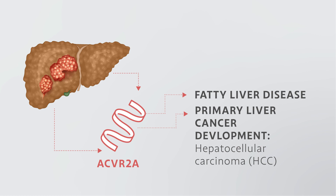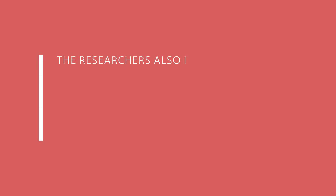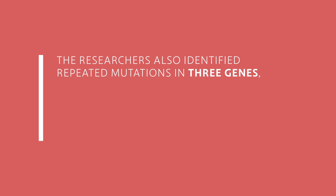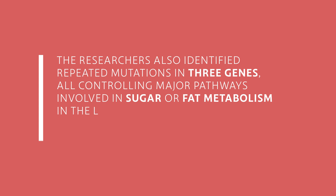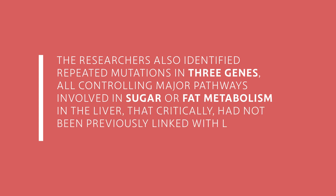The researchers also identified recurrent mutations in three genes, all controlling major pathways involved in sugar or fat metabolism in the liver — genes that critically had not been previously linked with liver disease or HCC.